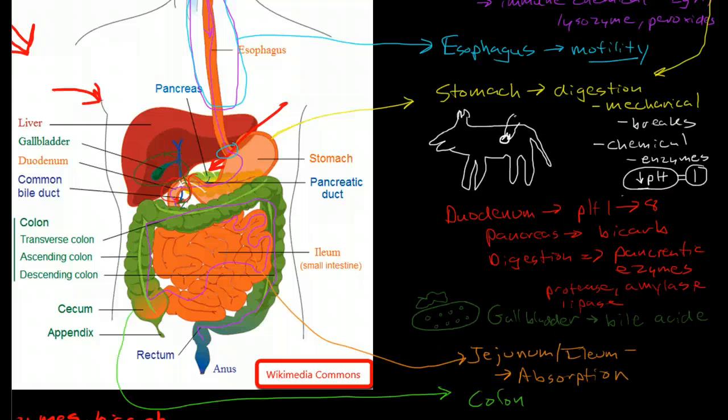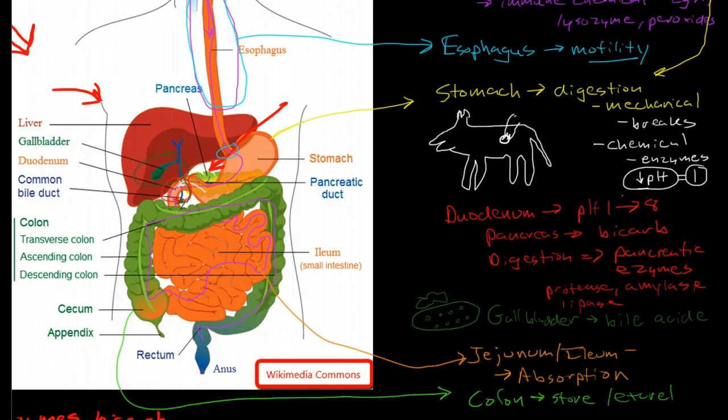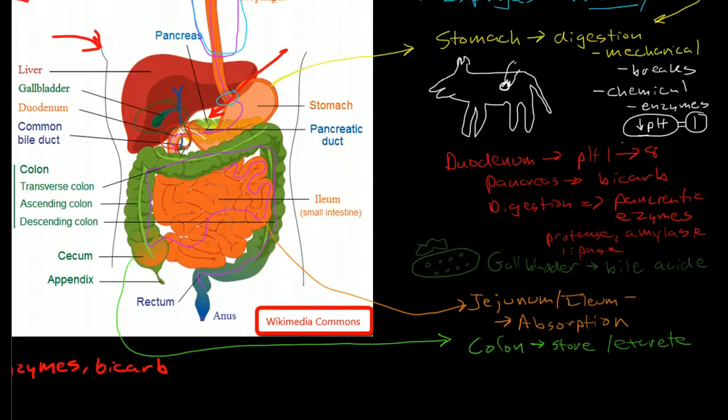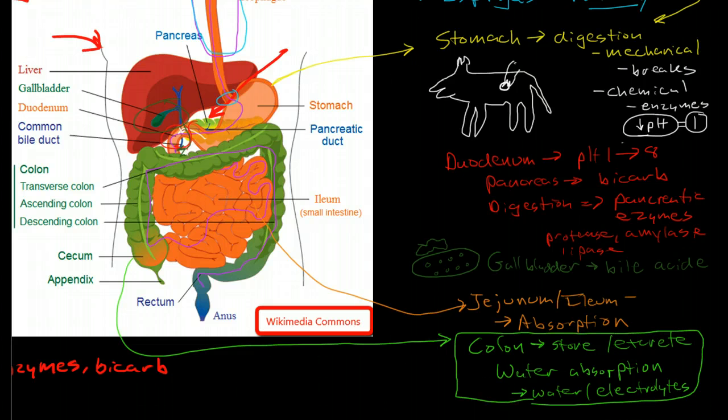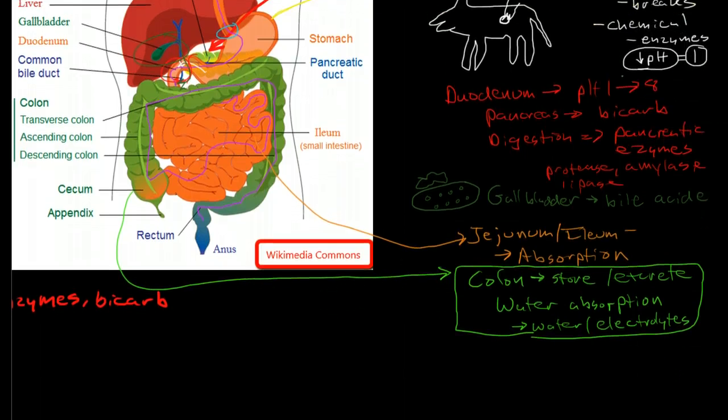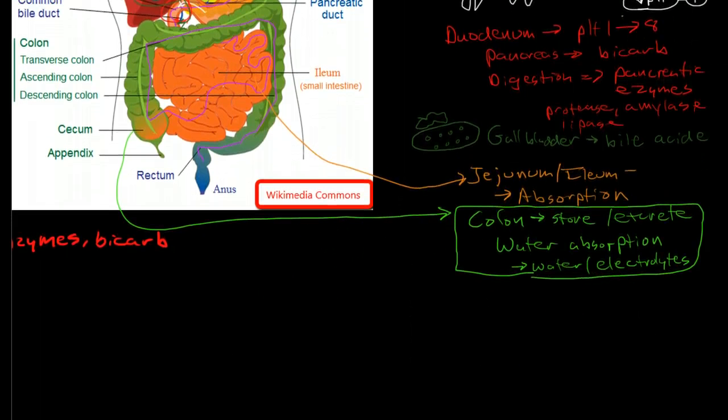And then we move into the colon. Now the colon, the major function of the colon is to store and then excrete waste, the waste that has sort of been accrued throughout the rest of the GI tract. And also is water absorption and this is very important because the colon has a significant role in maintaining the water balance and electrolyte balance in the body by changing the amount of water that is absorbed as fecal matter passes through the colon.